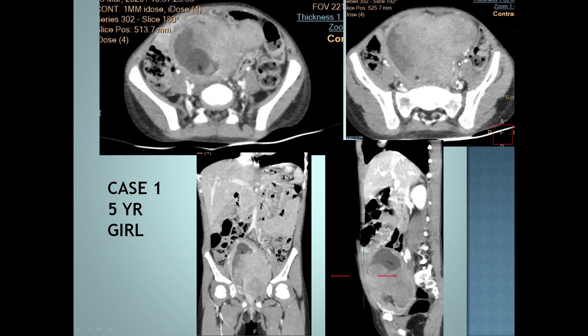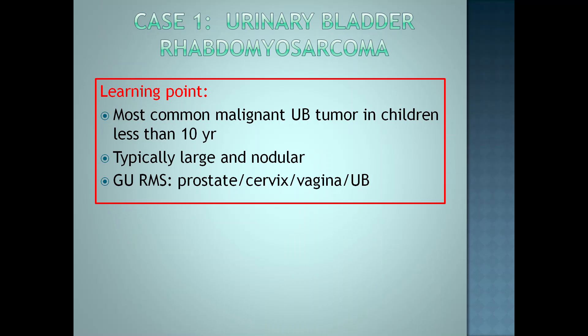So in a 5-year-old girl, the diagnosis is a malignant neoplasm, most likely rhabdomyosarcoma. Rhabdomyosarcoma is the most common malignant urinary bladder tumor among children less than 10 years. Typically, it is large, nodular, and extensive at presentation. Genitourinary RMS may involve the prostate in males, and the cervix and vagina in females, apart from the urinary bladder.